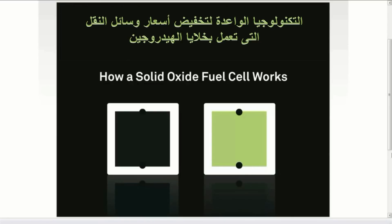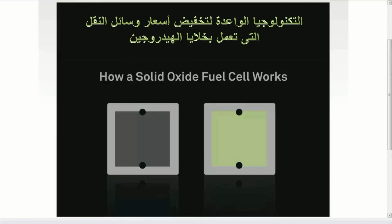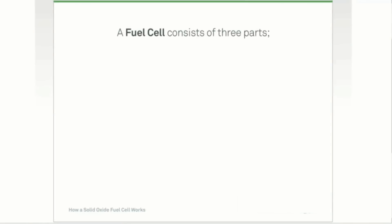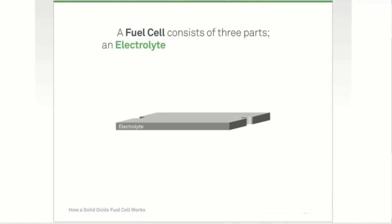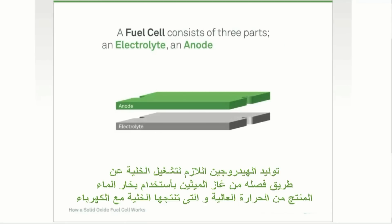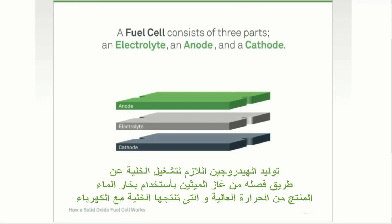A fuel cell is like a battery that always runs. It consists of three parts: an electrolyte, an anode, and a cathode.